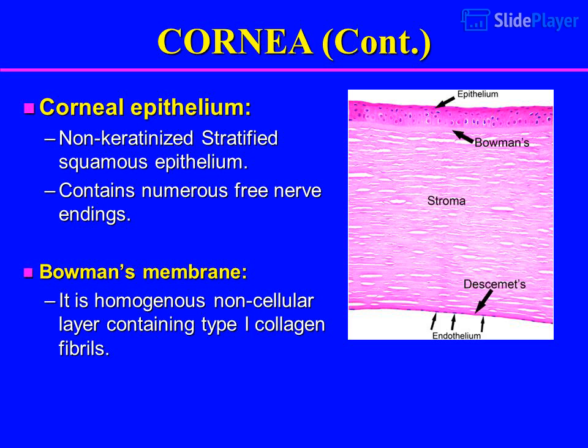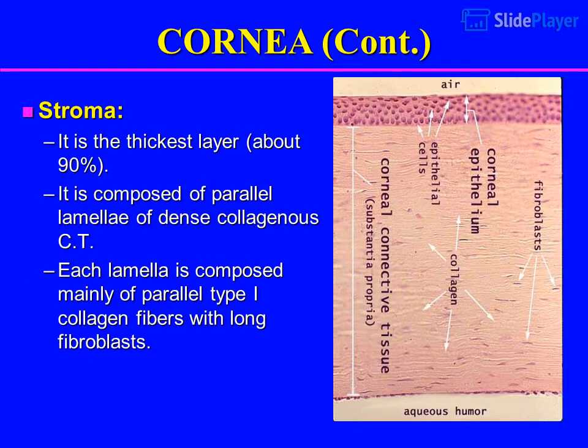Corneal epithelium: it is a non-keratinized stratified squamous epithelium and contains numerous free nerve endings. Bowman's membrane: it is a homogenous, non-cellular layer containing type I collagen fibrils.